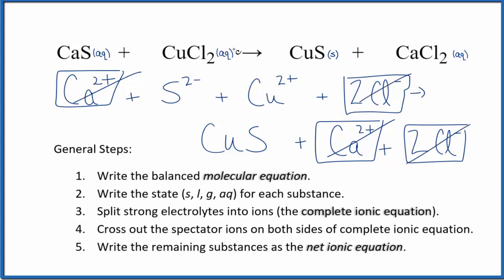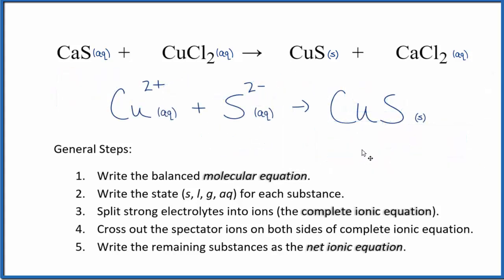What's left is the net ionic equation for CaS plus CuCl2. Let me clean this up, write the states. We'll have our net ionic equation. So this is the balanced net ionic equation for CaS plus CuCl2. You'll note that charge is balanced. We have a two plus and a two minus. That adds up to zero, net charge of zero. This is a neutral compound, net charge of zero.